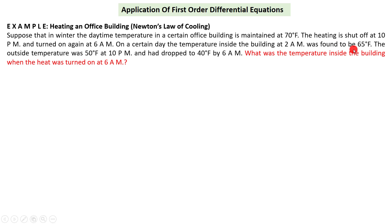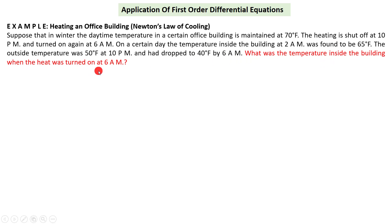was found to be 65°F. The outside temperature was 50°F at 10 p.m. and had dropped to 40°F by 6 a.m. The question is: what was the temperature inside the building when the heat was turned on at 6 a.m.? We have to find the temperature inside the building at 6 a.m.